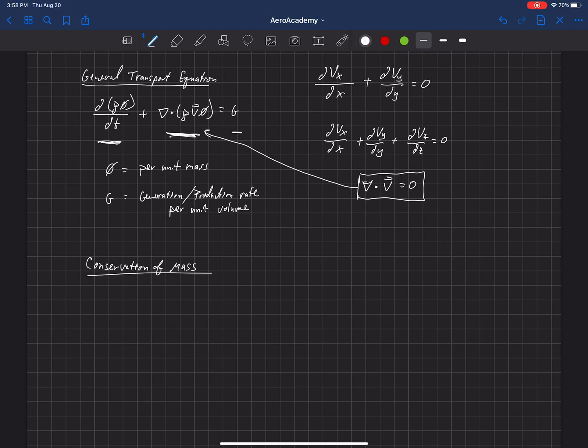So we can apply this general transport equation, but what we need is phi. We need to define phi, which is this property per unit mass. Well, if we're looking at conservation of mass, mass per unit mass is equal to 1 for this scenario.